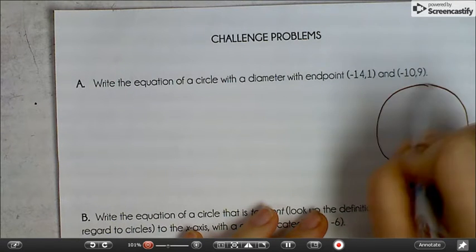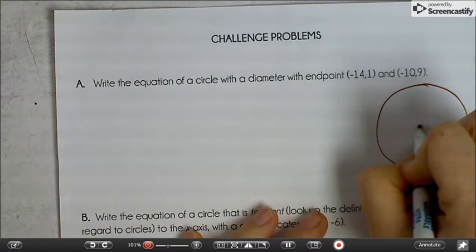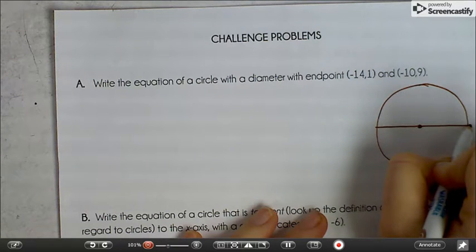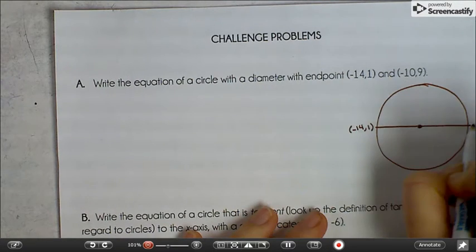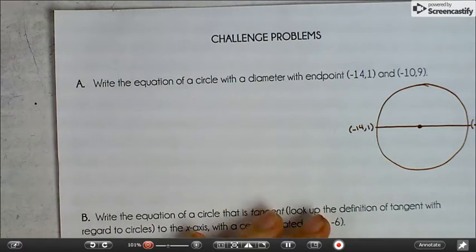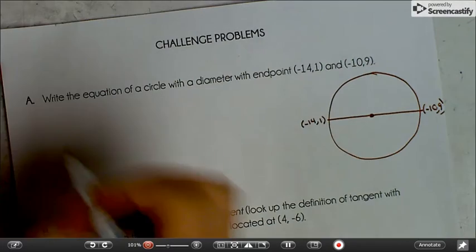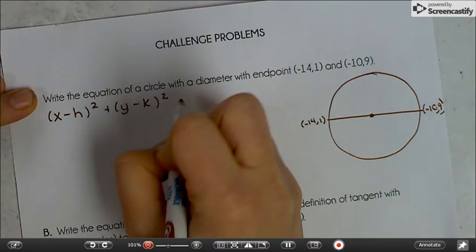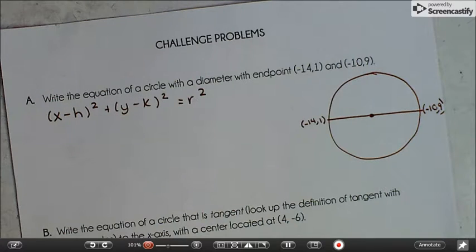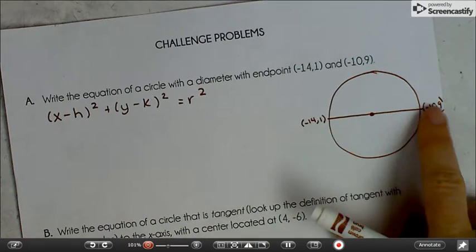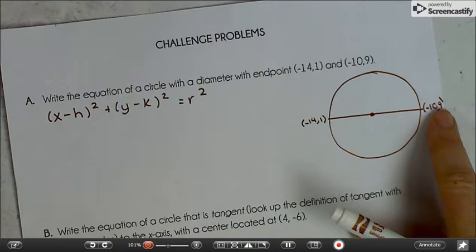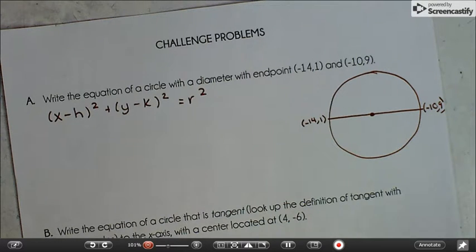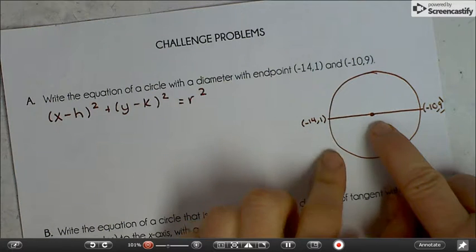So I'm just going to draw myself a little diagram. Here's our center of our circle. We have a diameter. This is negative 14, 1, and this is negative 10, 9. All right, the equation of a circle, x minus h squared plus y minus k squared equals r squared requires that you know a couple things. The radius, the center, and really a point on the circle if necessary. We definitely have two points on the circle, but we don't have the center right now. But it says this is a diameter, which means it crosses through the center.